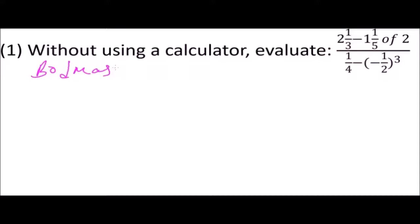We write our fractions here in improper form as we continue to solve. This is 2 times 3 plus 1, that is 6, so 7/3. Then we have minus—this is 5 times 1, that is 5 plus 1, which is 6 over 5. Multiply by (of means multiplied by) 2, divide by ¼ minus...